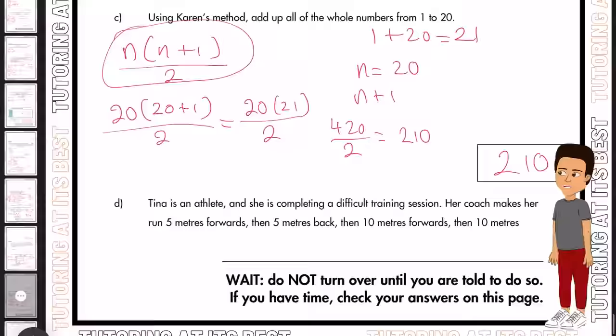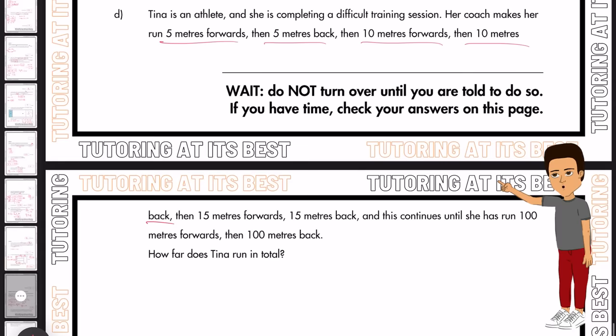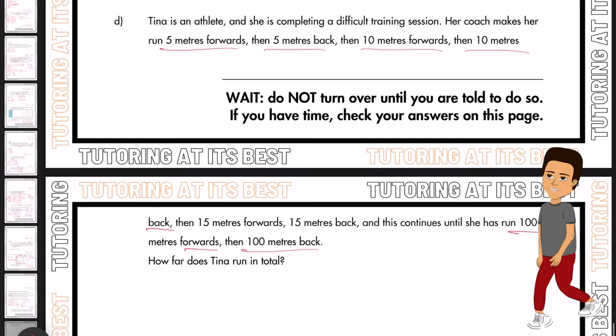Let's go for the final question now. So Tina is an athlete, and she is completing a difficult training session. Her coach makes her run 5 meters forward, and then 5 meters back. And then 10 meters forward, and 10 meters back, and so on. And this continues until she has run 100 meters forward and 100 meters back. So how far does Tina run in total?